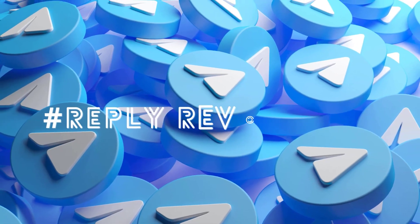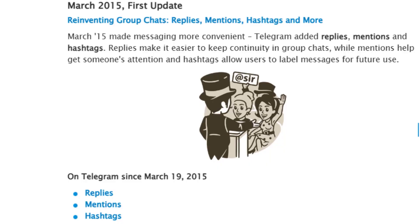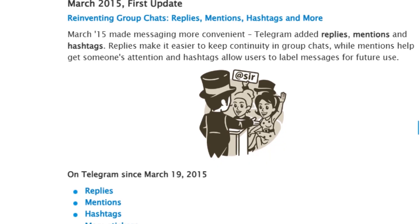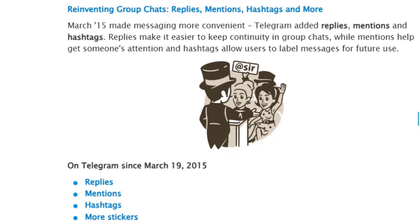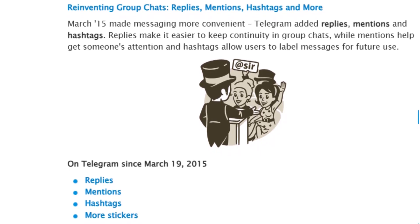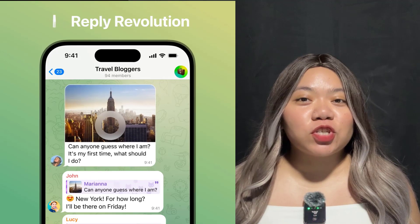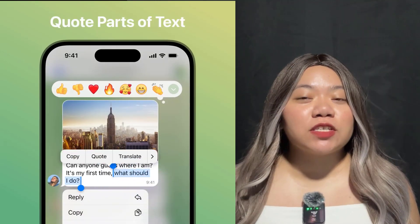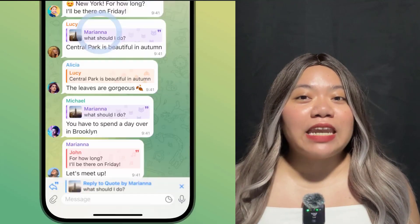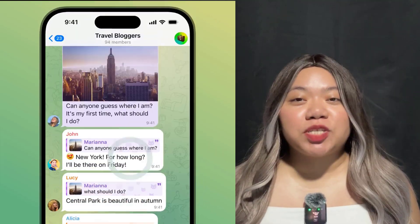Reply Revolution. Telegram pioneered replies back in 2015, for the first time giving people an intuitive way of following complex conversations in chat. Other messaging apps have adopted Telegram's standard, and today they're pushing the boundaries further. Now users can quote specific parts of any message, making the responses 100% precise.